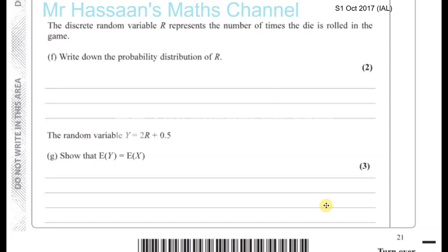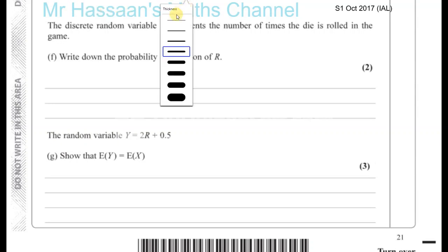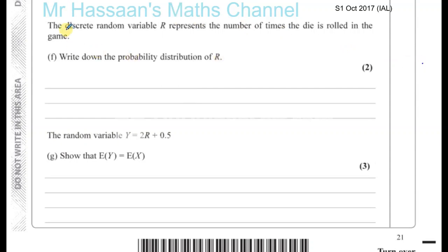Continuing on with question number 6 from October 2017, S1. The question is about discrete random variables. Part F says: write down the probability distribution of R. The discrete random variable R represents the number of times a die is rolled in this game.